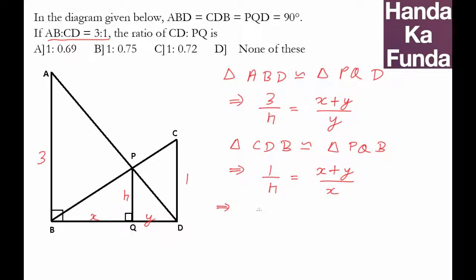If I divide these two equations with each other, what will happen? h and h will cancel. I'll be left with 3 equals x plus y, and x plus y will cancel. 3 will be equal to x upon y, which essentially means that x is equal to 3y.